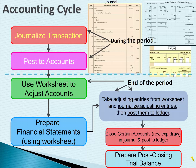After the adjustments have been entered into the journal and posted to the ledger, we're going to close certain accounts. Those are the temporary accounts called revenue, expense, and draw — also known as withdrawal. We're going to close those in the journal, and we'll find out why we close those.